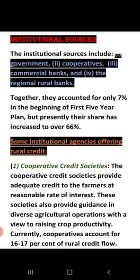Institutional sources include the government, cooperatives, commercial banks, and regional rural banks — all sources directly related to any government institution. At the time of the first Five Year Plan, only 7% of farmers took loans from institutional sources, but now it is 66%, because rural credit through institutional sources has become much more accessible.